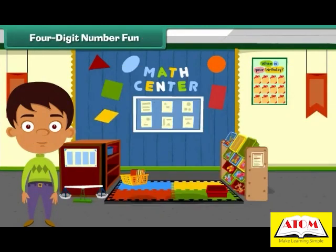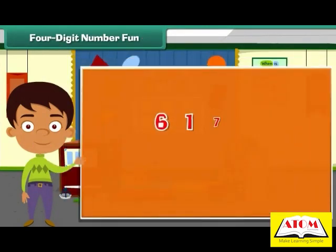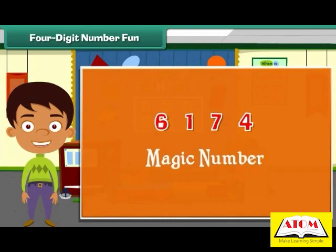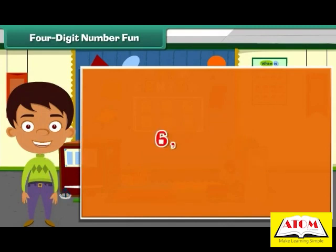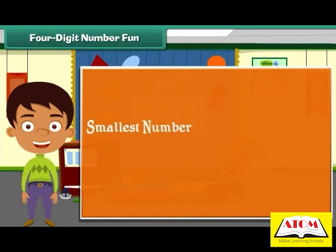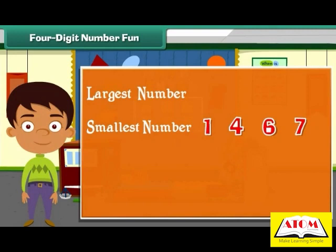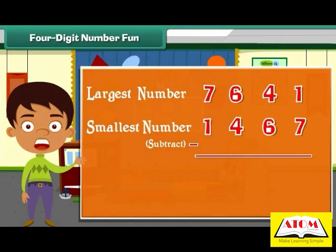Four-digit number fun. Look at number 6,174 — it is a magic number. Form the smallest and largest four-digit numbers using the digits 6, 1, 7, and 4. The smallest number formed is 1,467 and the largest possible number is 7,641. Now subtract 1,467 from 7,641. The difference is 6,174!